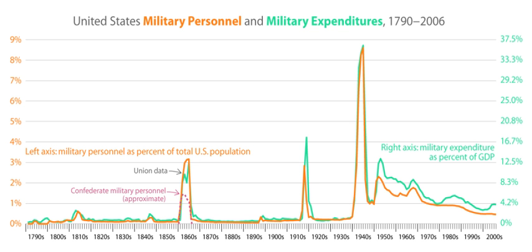Beginning in 1689, the colonies became involved in a series of wars between Great Britain and France for control of North America, the most important of which were Queen Anne's War, in which the British conquered French colony Acadia, and the final French and Indian War when Britain was victorious over all the French colonies in North America. This final war gave thousands of colonists, including Virginia Colonel George Washington, military experience which they put to use during the American Revolutionary War.